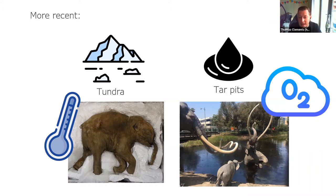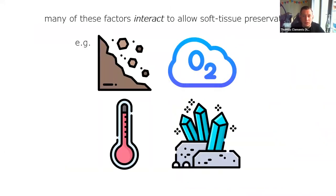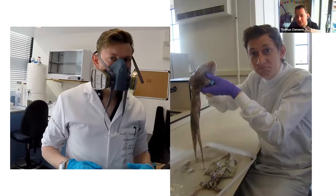These sites all share features that stopped bacteria from being able to eat the soft tissues. In the tundra, it's very cold — like your fridge — which slows down decay. In tar pits there's very low oxygen so bacteria can't eat all the soft tissues. The shared factors across all these sites are cold temperatures, low levels of oxygen, very rapid burial, or an abundance of minerals required to turn soft squishy things into rock. My job is to work out how these factors interact in different ways to allow fossils to form, by doing experiments in the laboratory.